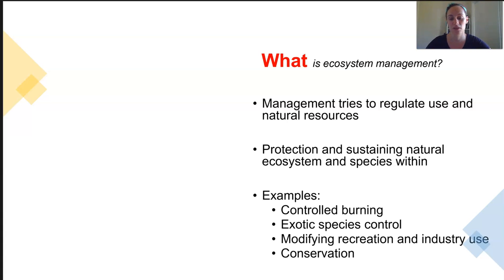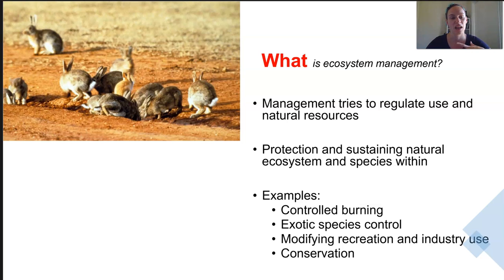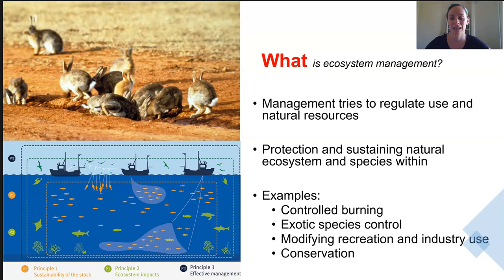Some examples of strategies include prescribed burning and fire management schemes, the control and removal of pest species or exotic species. We also need to monitor the use for recreation and industry like fishing, and we need to actively engage in conservation for particular species where needed.